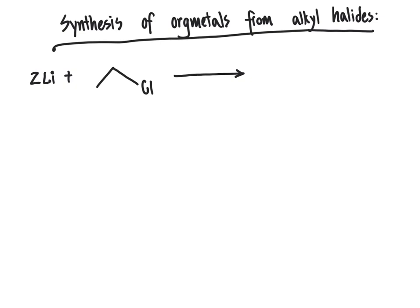And what we would observe as the product of the net chemical equation of this is we would replace the chlorine atom from our alkyl halide with a lithium atom. And as our other product, we would generate lithium chloride salt.